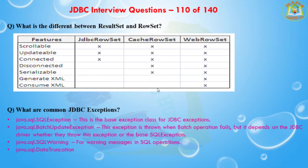The fourth common JDBC exception is java.sql.DataTruncation — this is thrown when a data value is unexpectedly truncated for a reason other than exceeding the maximum field size. To summarize: the major common JDBC exceptions are SQLException, BatchUpdateException, SQLWarning, and DataTruncation.